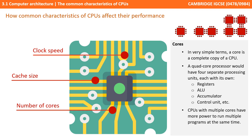The final factor to consider is CPU cores. A core is, in very simplistic terms, a complete copy of a CPU. So for example, a quad core processor would have four separate processing units, and each would have its own copy of registers, ALU, accumulator, etc. Therefore, a CPU that has multiple cores actually has the power to run multiple programs at the same time.